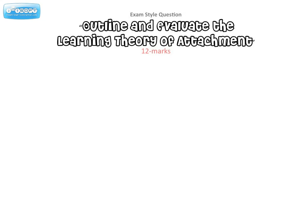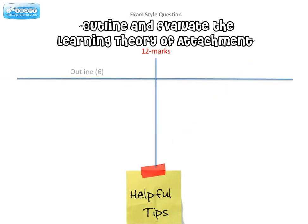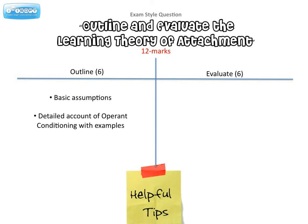In order to test your knowledge of this area — the learning theory of attachment — you should be able to answer an exam-style question. The question is to outline and evaluate the learning theory of attachment for 12 marks. For the outline section worth 6 marks, you should provide the basic assumptions of behaviourist theory, give a detailed account of operant conditioning with examples, and give a detailed account of classical conditioning with examples. Remember, do not use abstract ideas as examples — always use the given examples of mother, baby, and food.